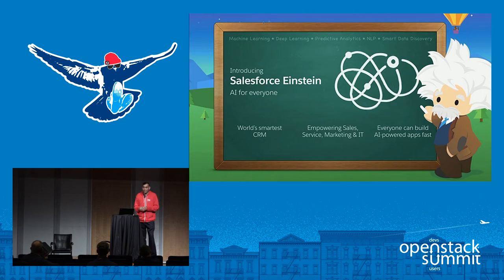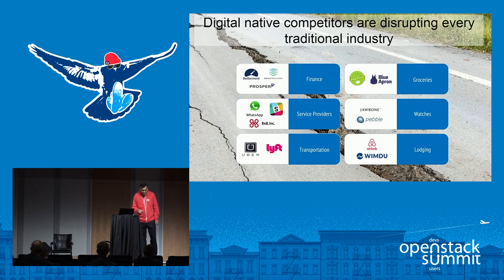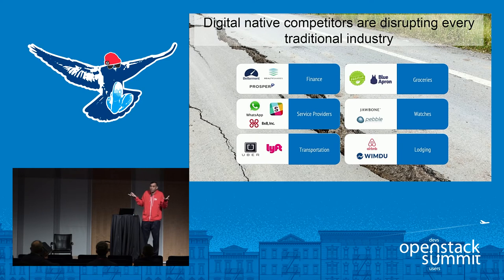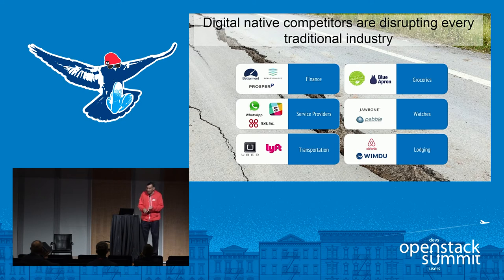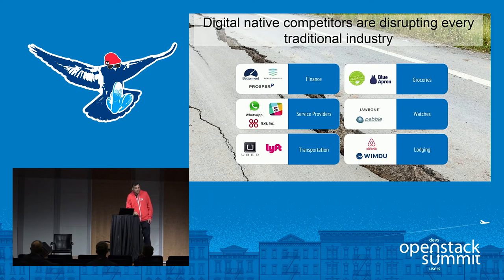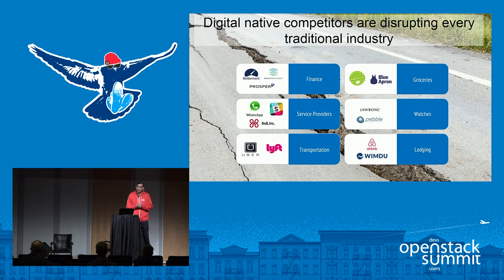So what does this all mean for enterprises? Digital native competitors — brand new companies showing up without any assets — are disrupting traditional industries. We just saw the hotel industry, the taxi industry, the rental car industry getting disrupted. And even watches: smart watches like Pebble or Jawbone or the Apple Watch — an entire industry just around smart watches.